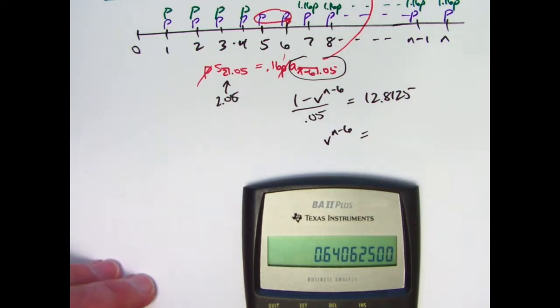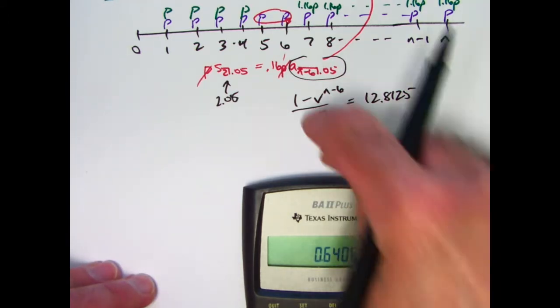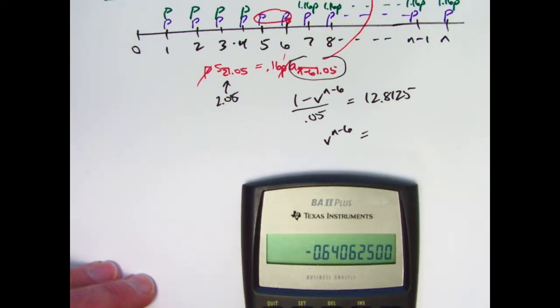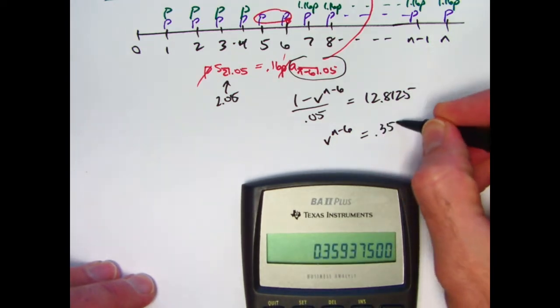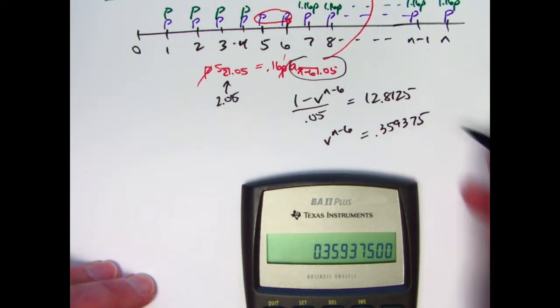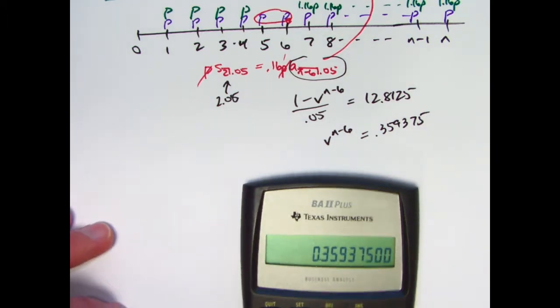Which means v to the n minus 6 itself, thinking about rearranging the resulting equation, should be 1 minus this thing. Should be 0.359375. So I did a few steps in my head there. You should make sure you can do that as well.